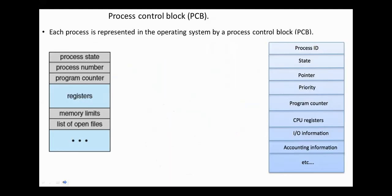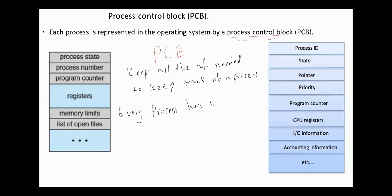Next, process control block. Each process is represented in the operating system by a process control block. Process control block keeps all the information needed to keep track of a process. A process control block is a data structure maintained by the operating system for every process. So every process has its own process control block. The process control block is maintained for a process throughout its lifetime and is deleted once the process terminates.